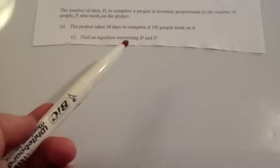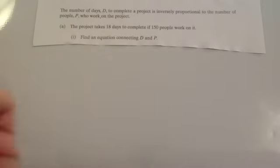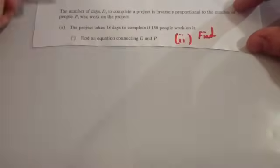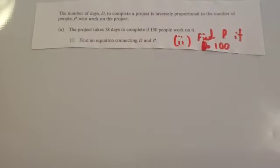Find an equation connecting D and P. And the second part of the question actually is, find the number of people, P, if the time taken to complete at D is equal to 100 days. So, let's do that now.